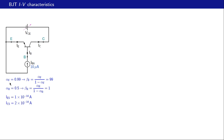The parameters we will consider are: alpha-F, the forward alpha, equal to 0.99, making beta equal to 99; alpha-R, the reverse alpha, equal to 0.5, making the reverse beta equal to one — so this transistor is very poor in the reverse direction. The saturation currents are IES equal to 10⁻¹⁴ amperes and ICS equal to 2×10⁻¹⁴ amperes.